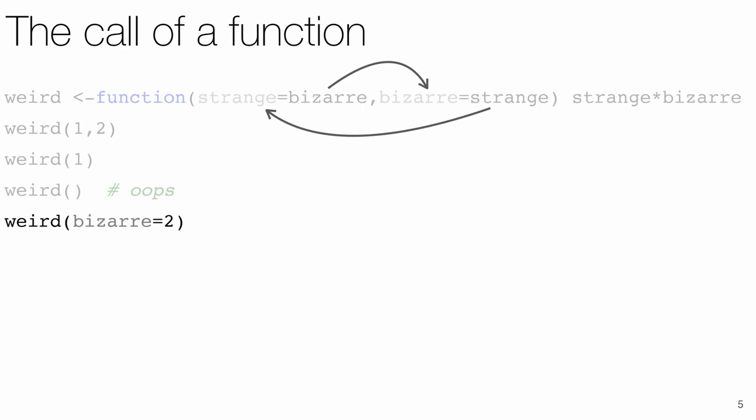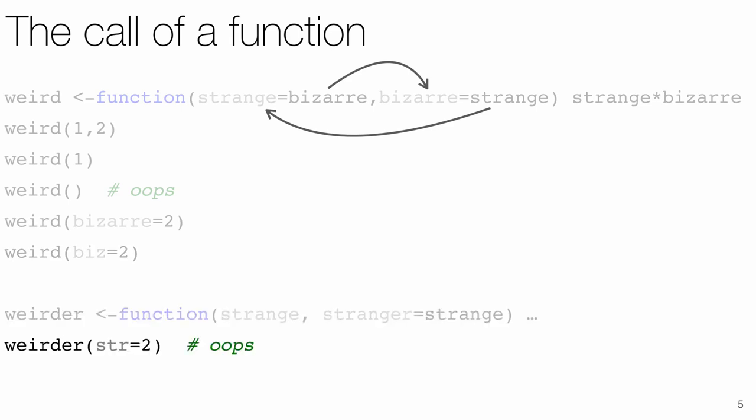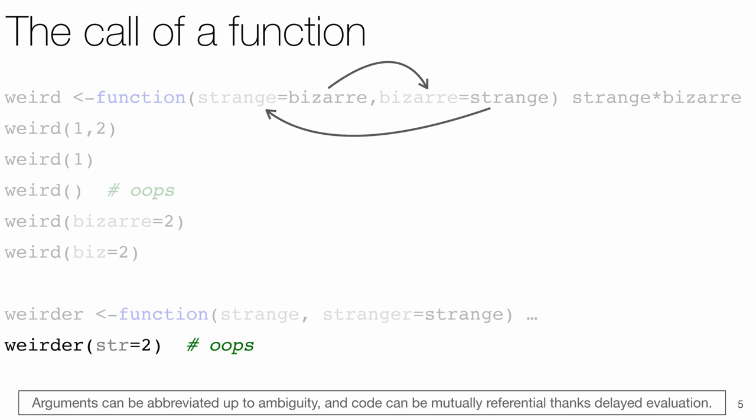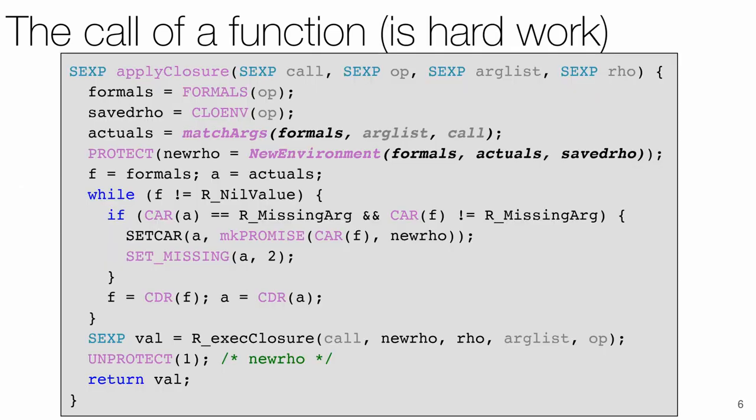Again, we can pass by name. And if we don't feel like typing too much, R will also happily accept a prefix of a parameter name. We can get weirder still, and if we're not careful about common prefixes, we get burned.